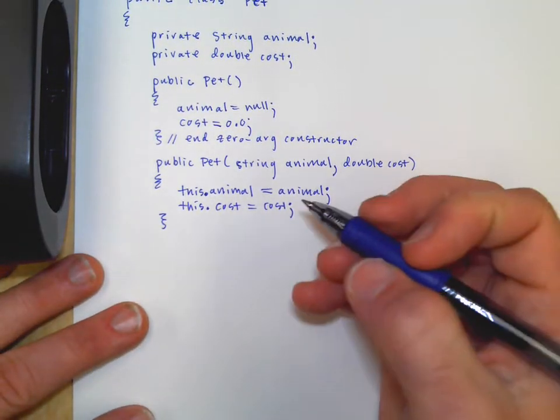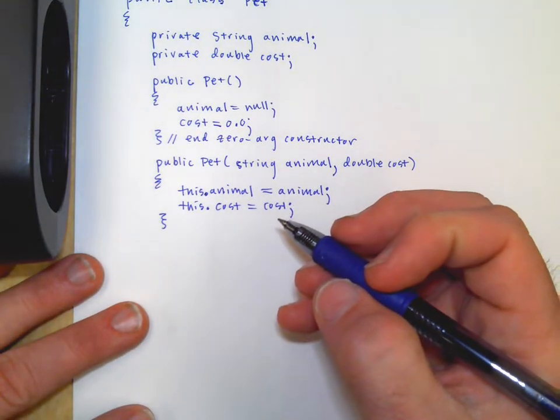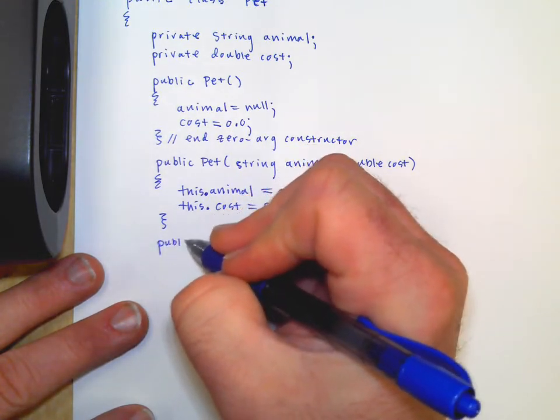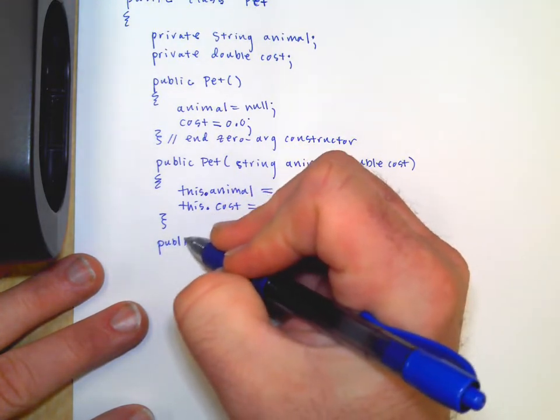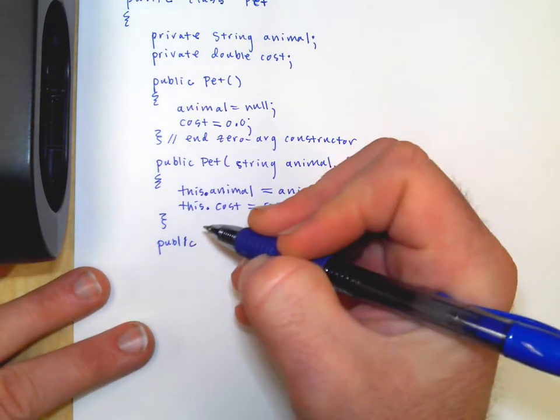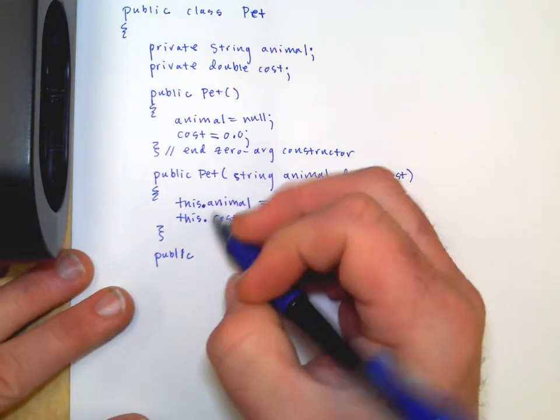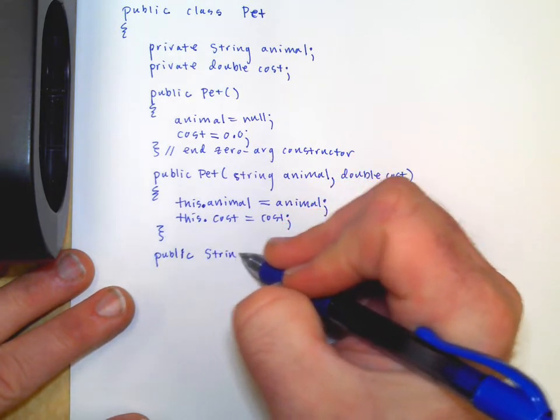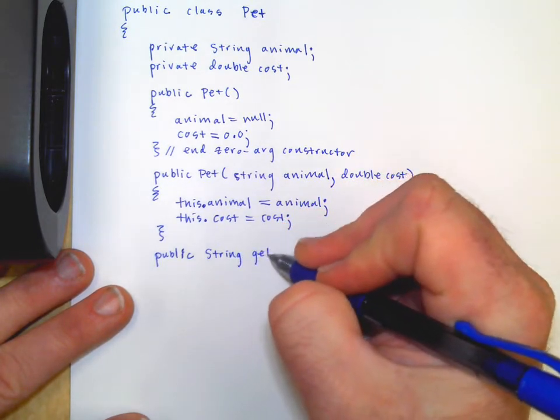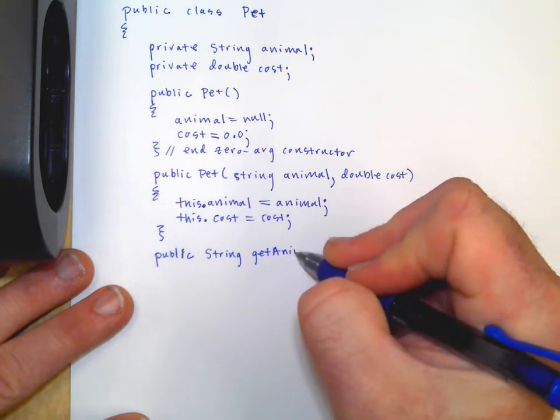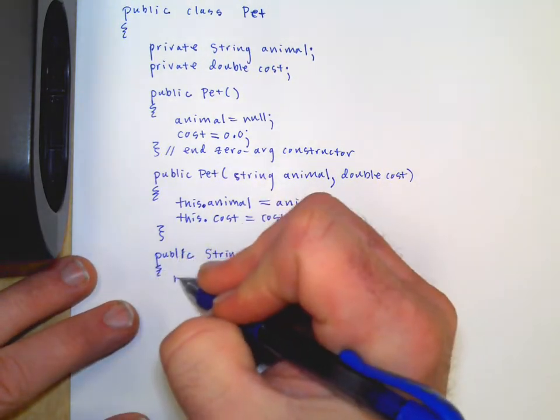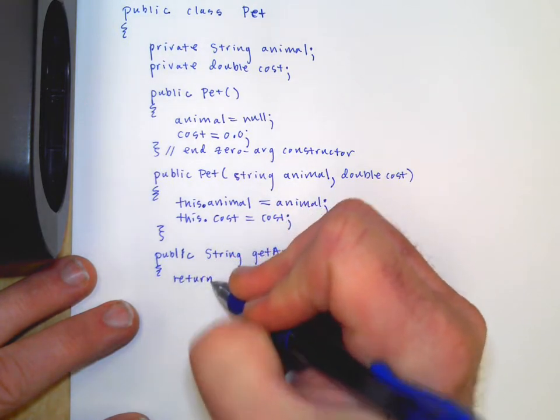Now, we could create getters and setters. We could say public. So you got to say public. That means it's accessible by a client class, another class. You got to say what kind of thing it returns. So we're going to say it's going to return a string. It's going to be get animal. And usually getters are zero arg. And they're usually pretty simple. We'll just return animal.